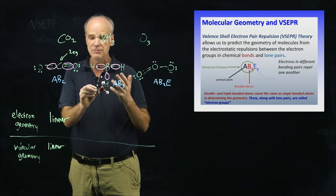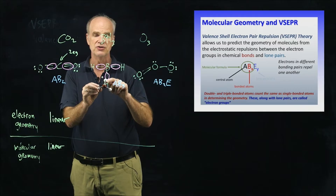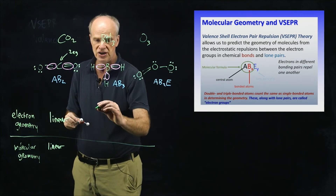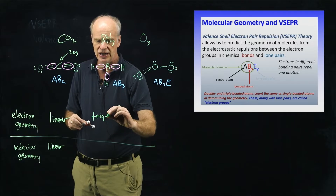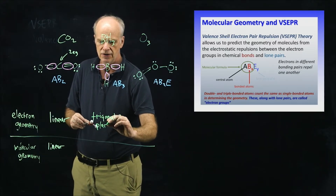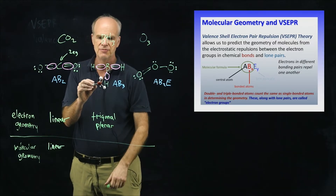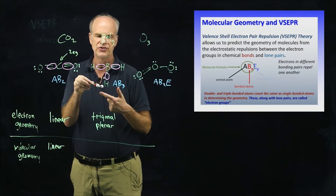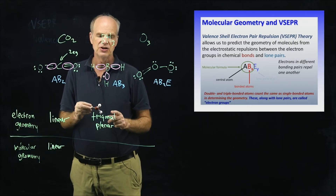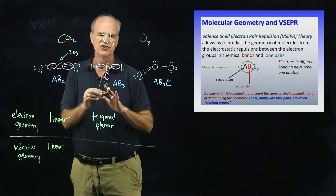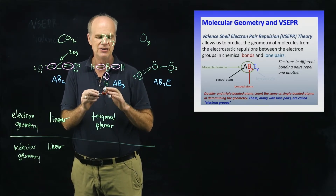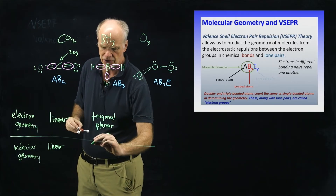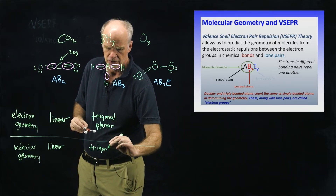We can name the electron group geometry: with three electron groups around the central atom getting as far apart as possible, this is called trigonal planar electron geometry. It's called planar because all four atoms of the AB3 molecule are in the same plane. The molecular geometry — which only considers where the atoms are in space — is also trigonal planar.